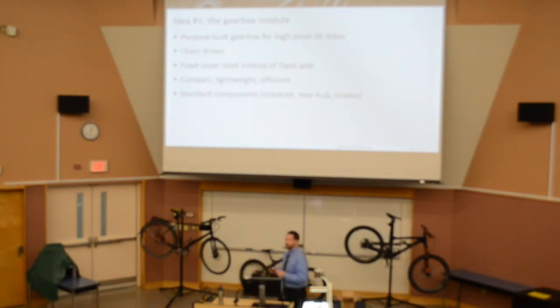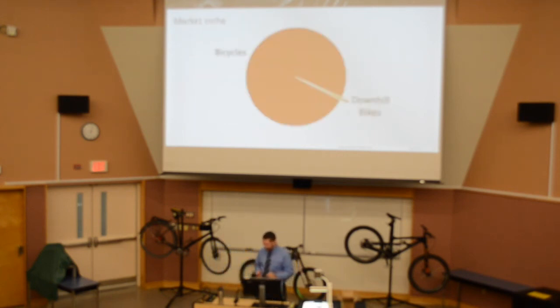So I wanted to invert all that and design a purpose-built gearbox for this sort of application. For high pivot, downhill bikes specifically. It would be chain driven, a chain up to it, and then another chain to the rear wheel. As I said, a fixed outer shell instead of a fixed axle. Oh, lots of adjectives we can throw at it. Compact, lightweight, efficient, indestructible, et cetera, et cetera. And as much as possible, I wanted to use standard mountain bike components. So I wanted to use standard cranks, hubs, brakes, et cetera. But of course, it is a purpose-built frame to accommodate such a hub, such a gearbox. And I recognize there's some challenges. It is not an enormous market.